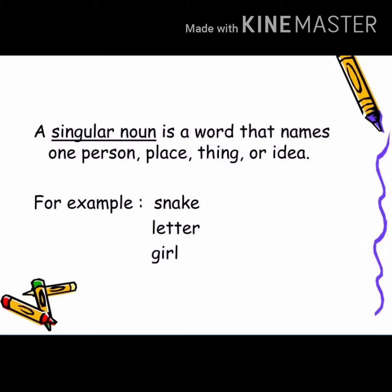It means that if there is only one thing, one person, one place, or one idea we are going to represent, then there will be a singular noun. Suppose you are saying 'city' — it is singular. If you are saying 'cities,' it means there are more than one city, so it is not a singular noun. For example: snake — one snake, so it is singular. Letter — one letter, it is singular. Girl — one girl, so it is singular.